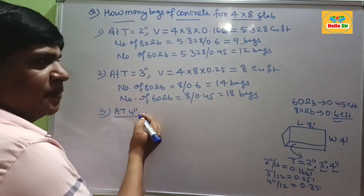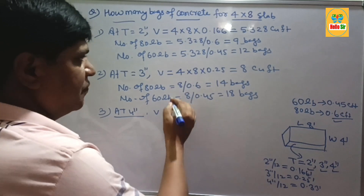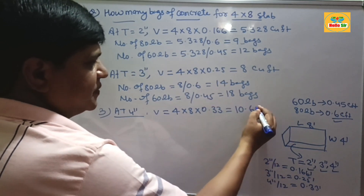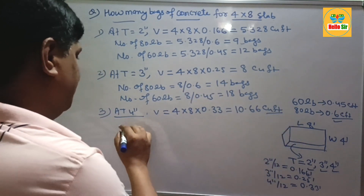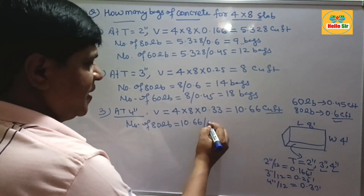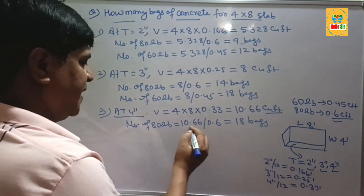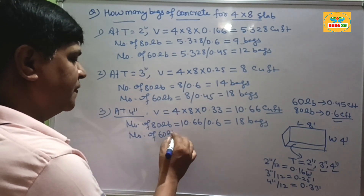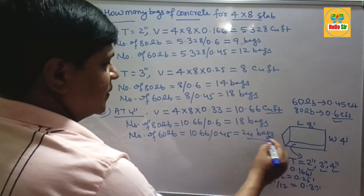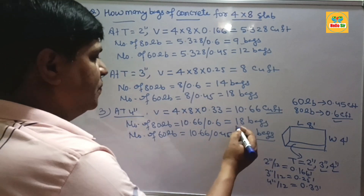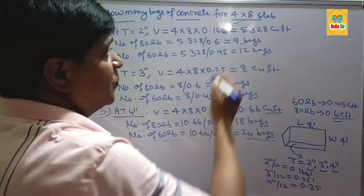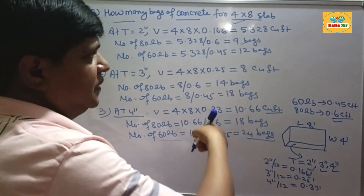Now for a thickness of 4 inches — if the thickness of the slab is 4 inches, the volume of required concrete is 8 times 4 times 0.33 feet, which is about 10.66 cubic feet. To find the number of 80 lb bags, simply divide 10.66 by 0.6, which comes to about 18 bags of 80 lb concrete. For 60 lb bags, 10.66 divided by 0.45 comes to about 24 bags of concrete. So at a thickness of 4 inches, you will need about 18 bags of 80 lb or 24 bags of 60 lb concrete for your 4x8 slab.